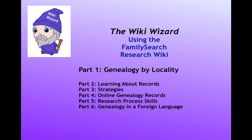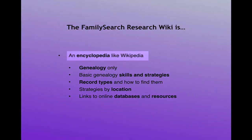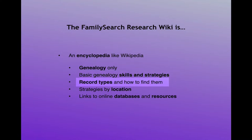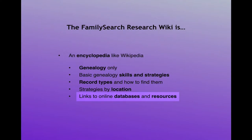This is the first in a series of videos intended to help you learn how to use the FamilySearch Research Wiki. The Research Wiki is an encyclopedia just like Wikipedia, with the exception that all of the articles are about genealogy. Here you will find articles on basic genealogy skills and strategies, the various record types available and how to find them, strategies based on the location you are searching in, and links to important online databases.